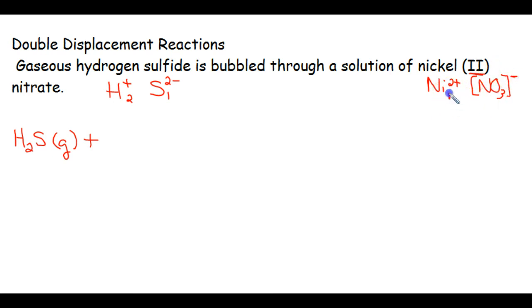If we swap, draw, produce, that means we're going to need 1 nickel and 2 nitrates. So when we write this, we're going to need parentheses around that nitrate because there's more than one of them. And since it is a solution, we're going to write AQ.